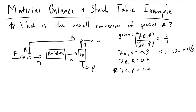Our goal is to determine the overall conversion of species A. Our feed has a composition of two moles of reactant B relative to one mole of reactant A. In our reactor, we take that mole of A and collide it with enough energy in a particular orientation with two moles of B to generate one mole of C.